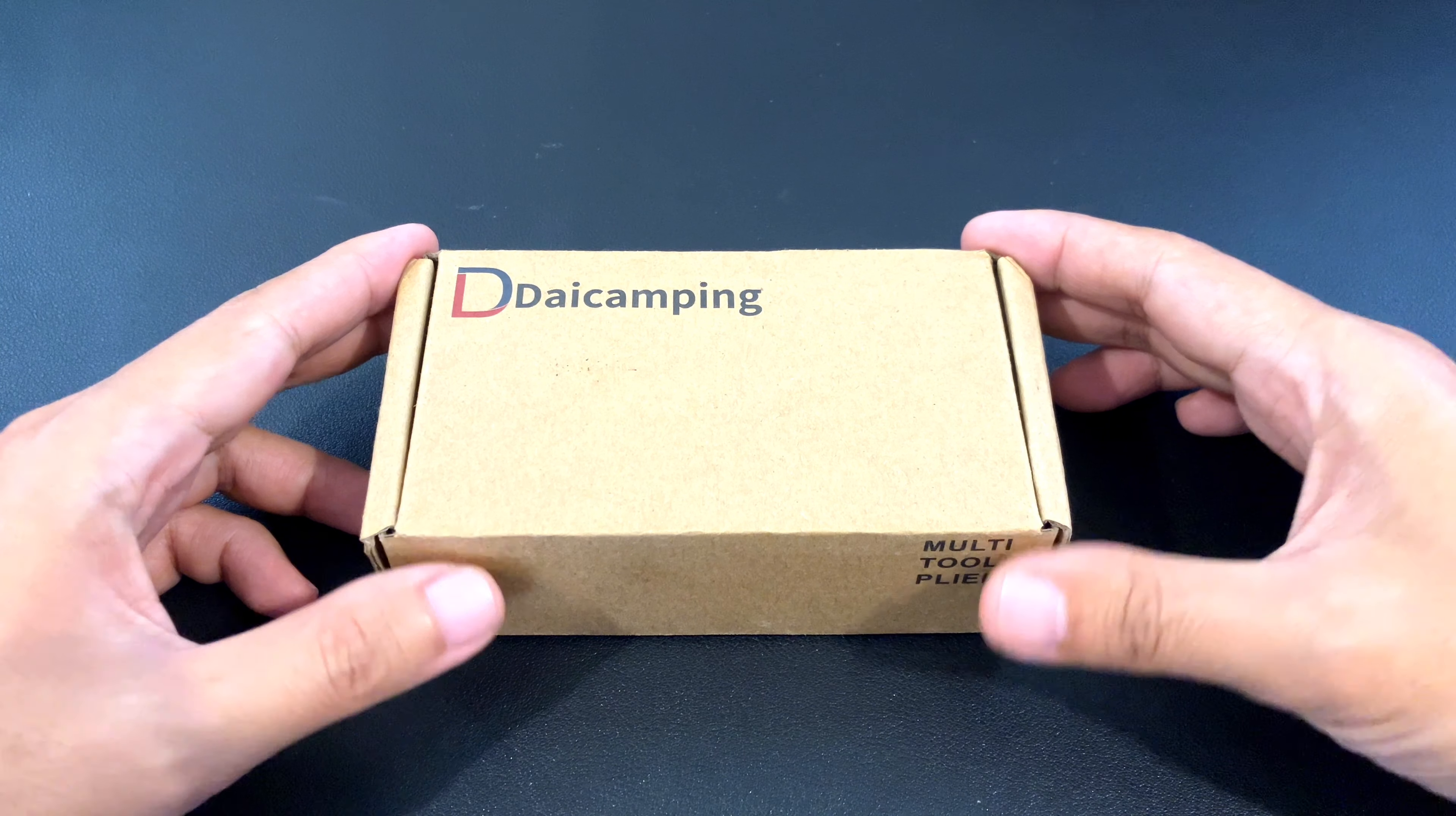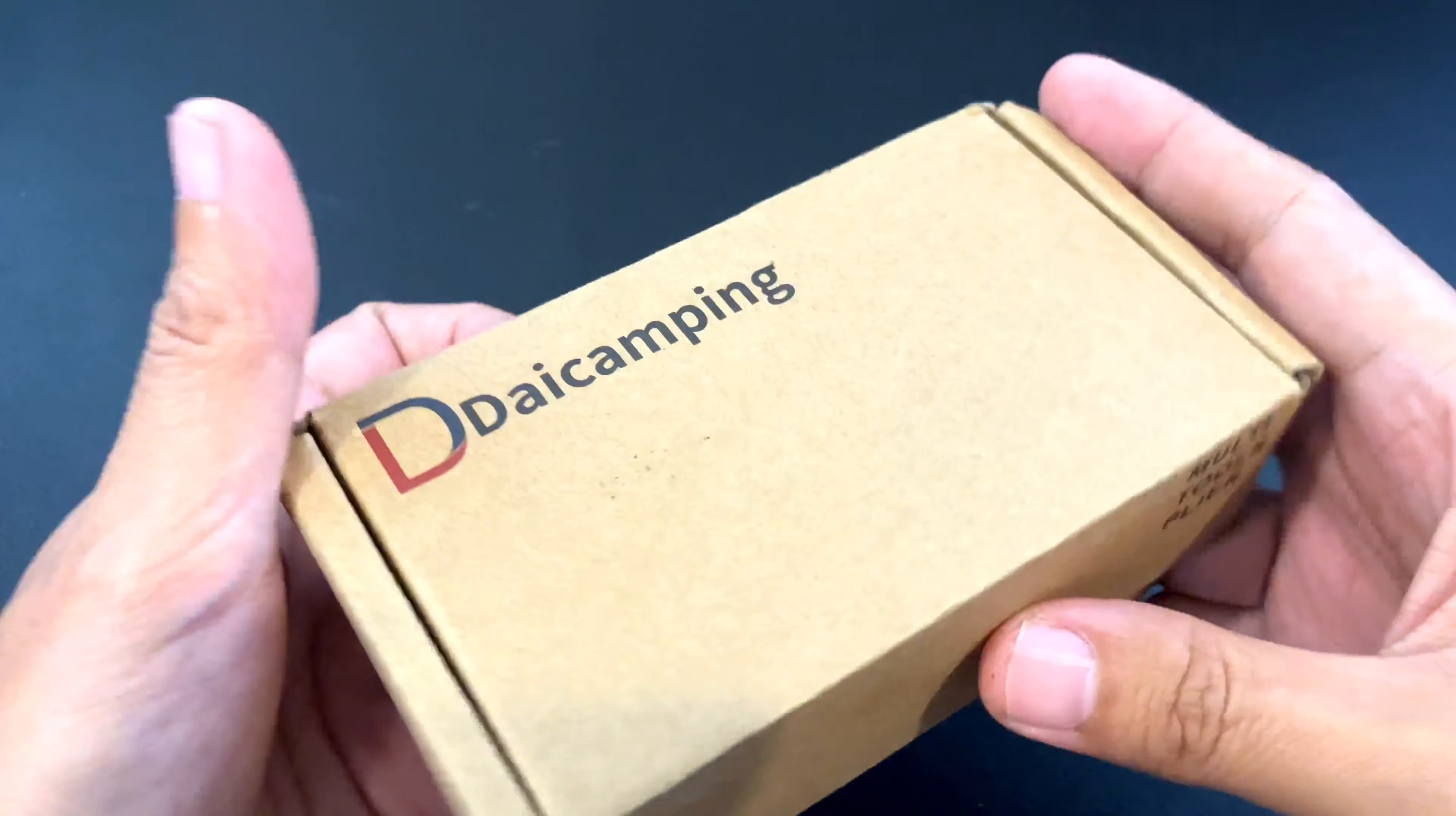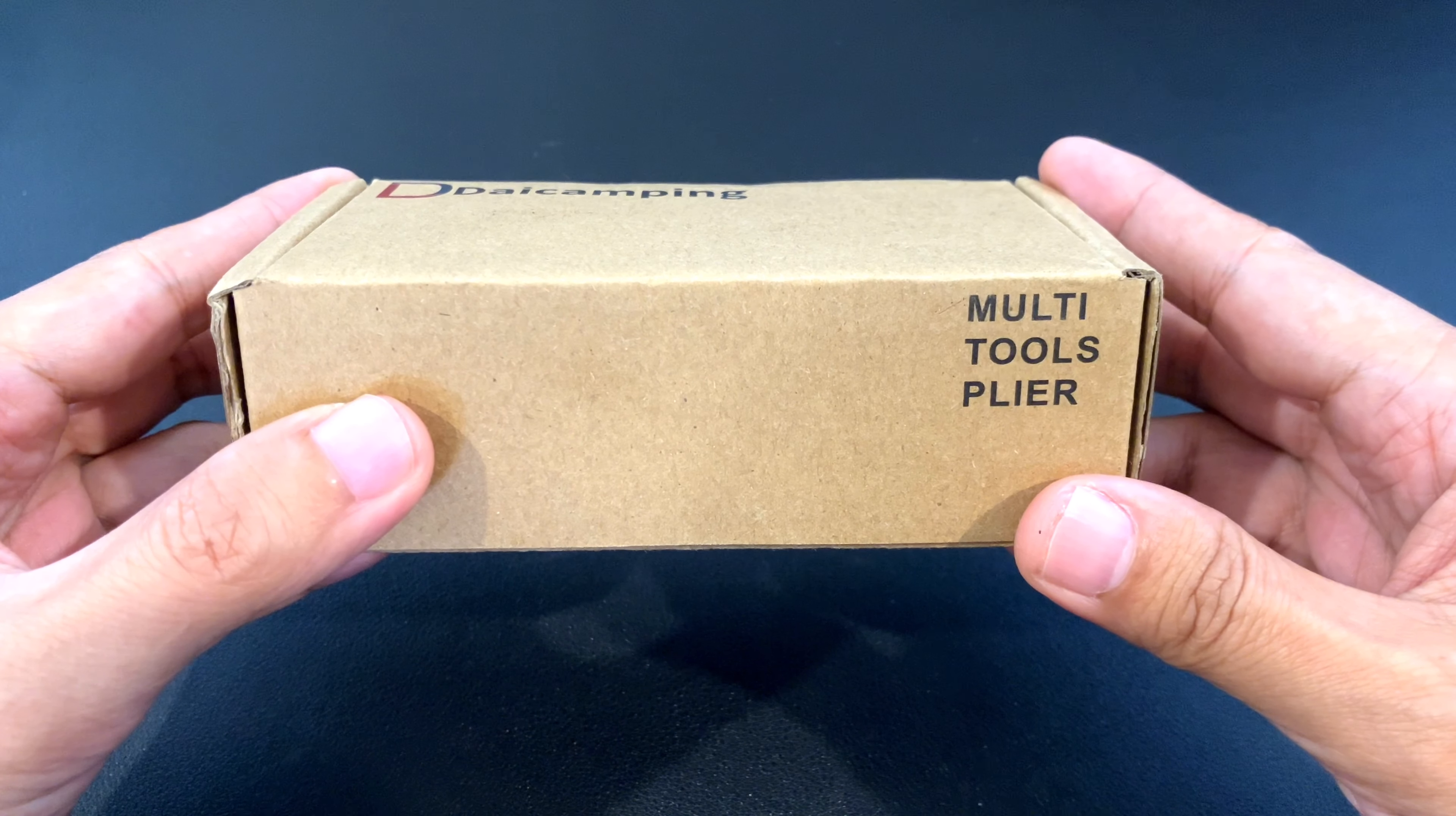It comes in this plain brown box and there's really nothing here other than the Daycamping branding and multi-tool pliers. So let's just take a look inside.